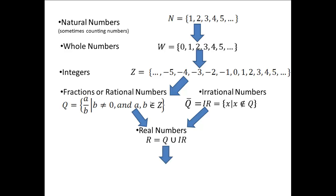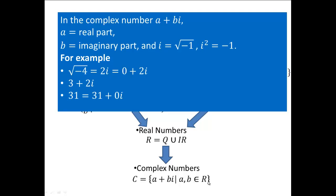Now the new set of numbers — the set of complex numbers. Just having real numbers was not enough. People realized that and formed a set of numbers called complex numbers, which are of the type a plus bi, where a and b belong to the real numbers. Any number of the form a plus bi: a is called the real part, b is called the imaginary part. That i is the value of square root of negative 1, or you can think of i as a number whose square is negative 1. We know that no real number squared gives you a negative value, so i is an imaginary number.